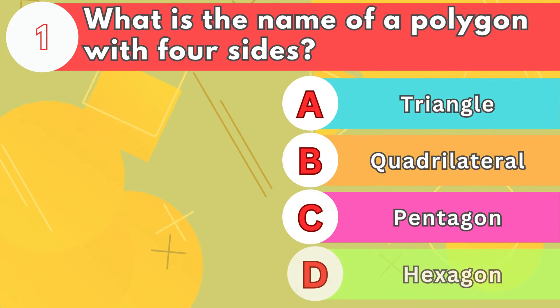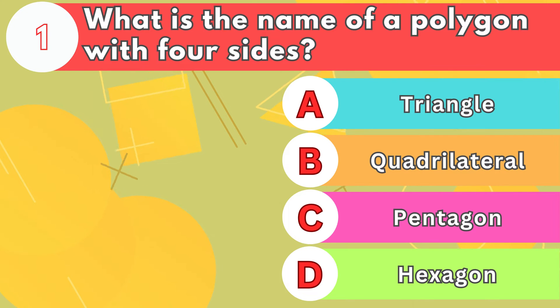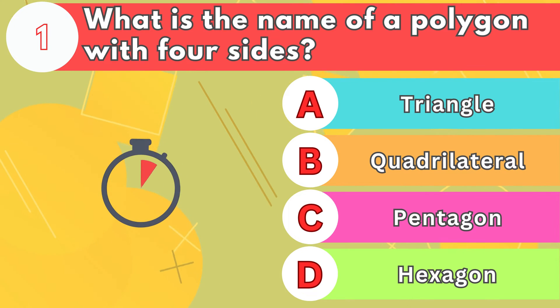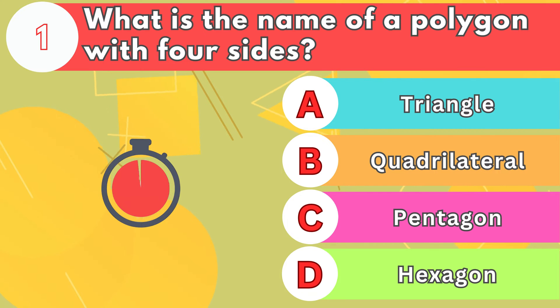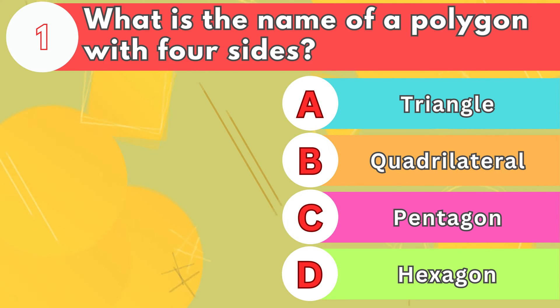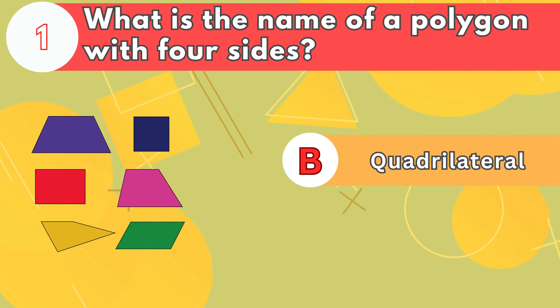Number 1. What is the name of a polygon with four sides? The answer is letter B, quadrilateral.